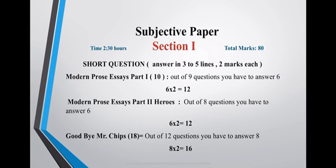In section 1, you have to answer short questions in 3 to 5 lines. Each question carries two marks. In second year English Book 2, Part 2, there are 5 heroes. You have to attempt 6 questions out of 8.